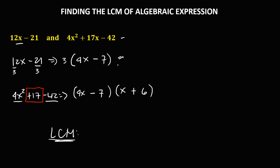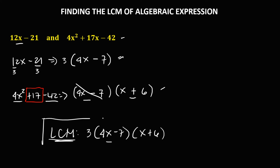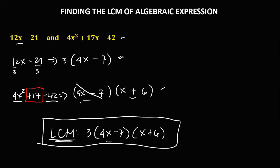To find the LCM: copy the first factor as 3 times (4x minus 7). For the second expression, 4x minus 7 is already present so no need to add it, but x plus 6 needs to be added. So the LCM is 3(4x minus 7)(x plus 6). This is the LCM of this expression.